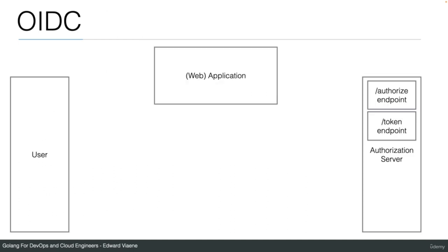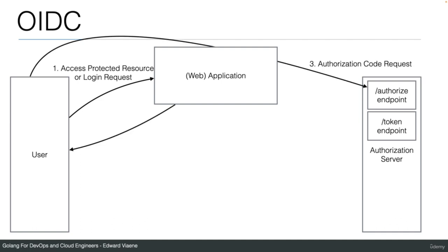Let's talk about the authorization code flow. On the left you have the user (web browser), then the web application (a Golang backend), and then the authorization server with an authorize endpoint and a token endpoint. The user first connects to the web application to access protected resources or press a login button. The web application then sends an HTTP redirect to the authorization server — the application says it's not responsible for login, go to the authorization server.